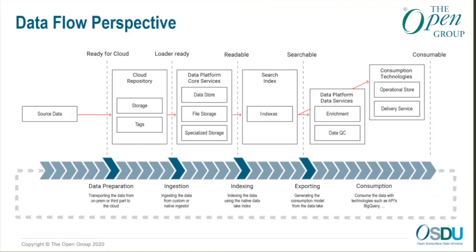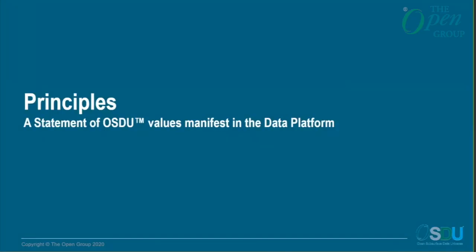Once that is in place, you could directly consume the data within your target application or service. But if you need to further enrich the data — improve its quality, curate it, etc. — those are all things done as part of the enrichment service portion of the platform. On the consumption side you may think about additional caches, and so on — that's what the option store and delivery services handle. Any data produced by an OSDU-based application or service follows that loop all the way back through the ingestion, indexing, enrichment, and delivery steps.